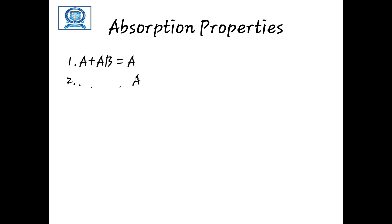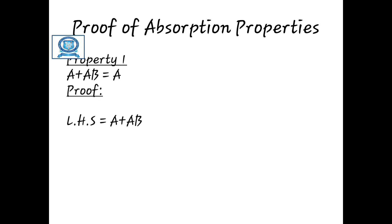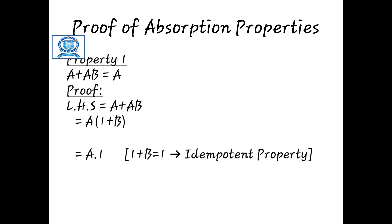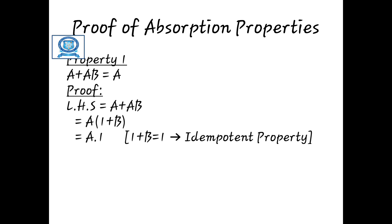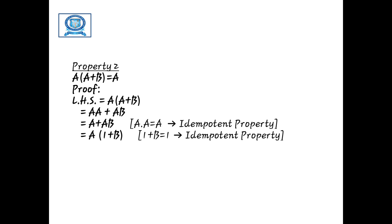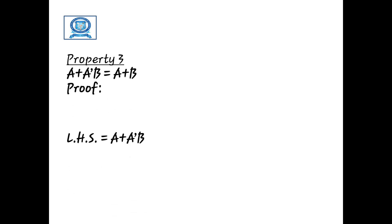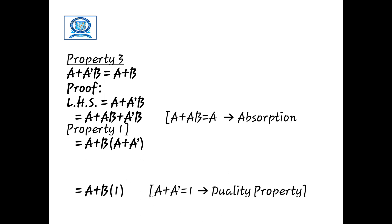The absorption property states: a plus ab equals a, and a times (a plus b) equals a. For the proof of the first: taking the LHS, a plus ab — factoring out a gives a times (1 plus b), and since 1 plus b equals 1, this becomes a times 1 which equals a. For the second: a times (a plus b) expands to a·a plus ab, which simplifies to a plus ab, then factoring gives a times (1 plus b) equals a.